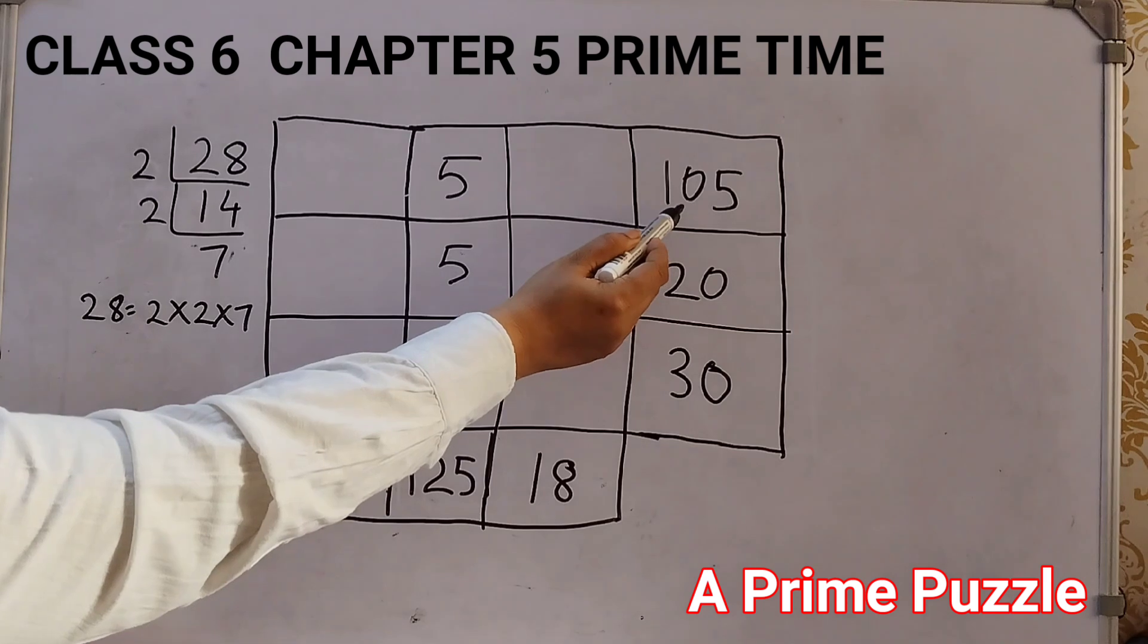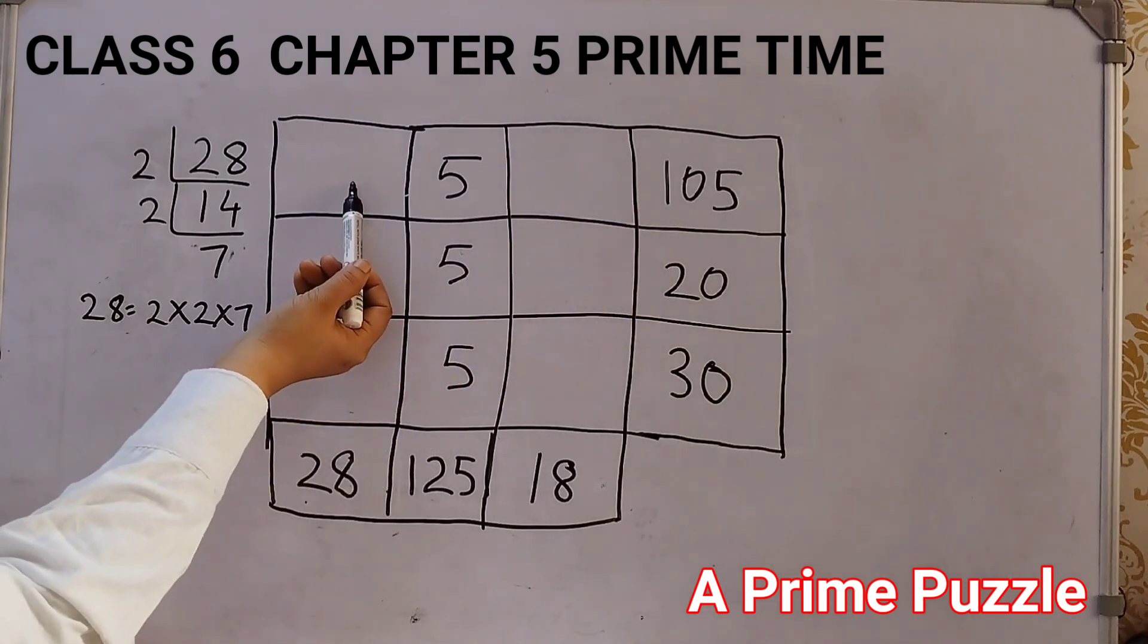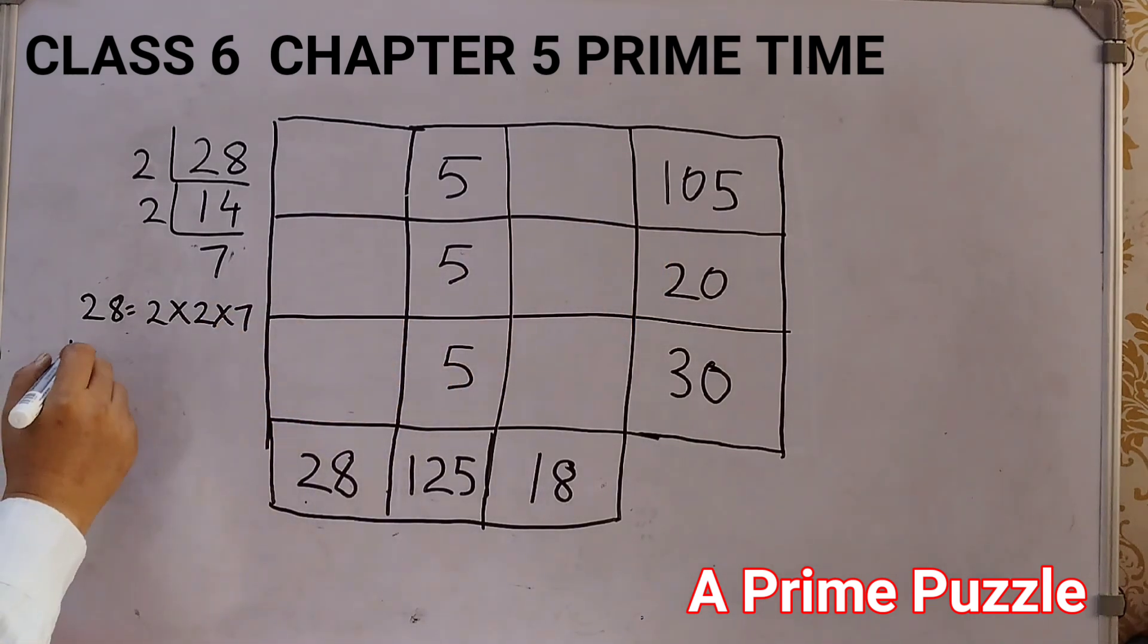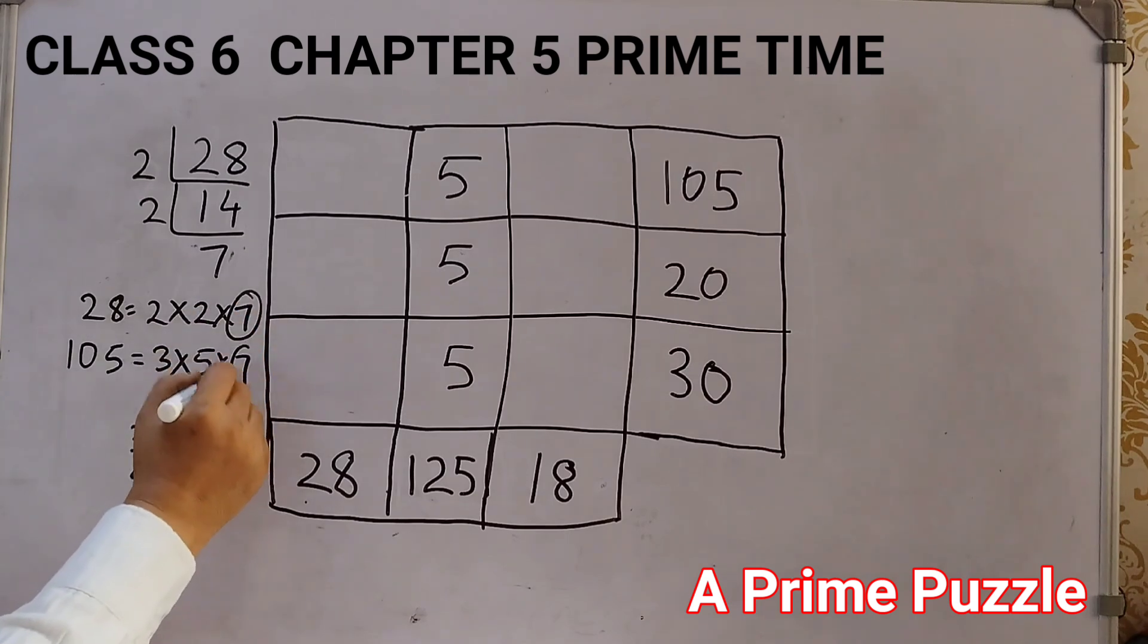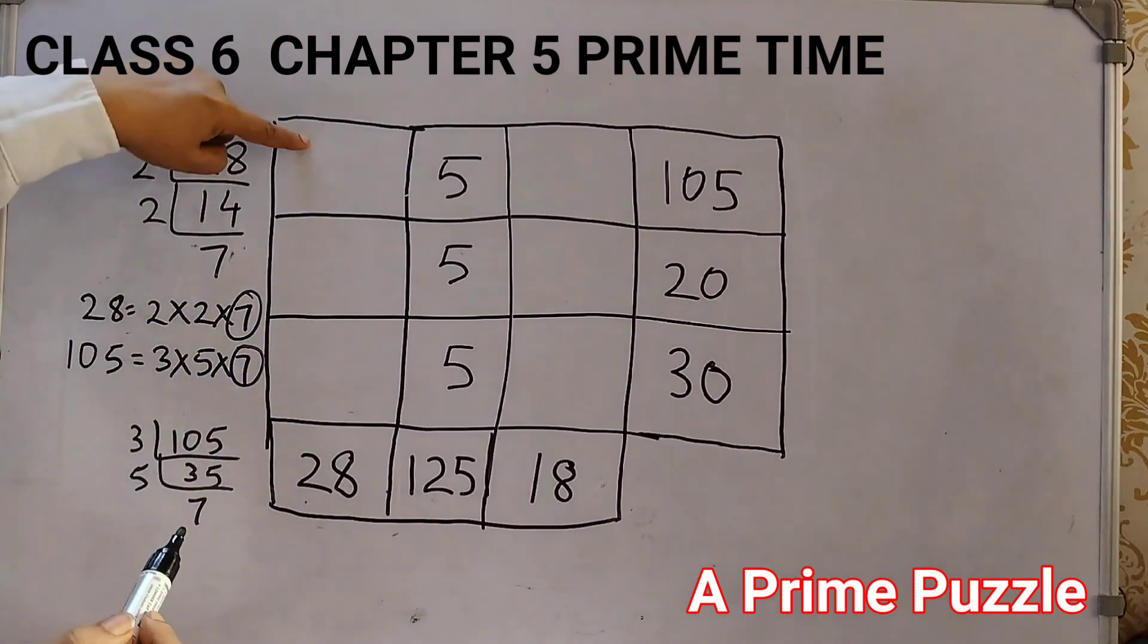And I will take this number, 105, because I am looking for a number here, a common number. So, for 105, same way we will do. 105 if I divide, divisible by 3. 3 3s are 9, 15, 3 5s are 15, 5 7s are 35. So, this is 3 into 5 into 7. And you see here, we have a common number 7.